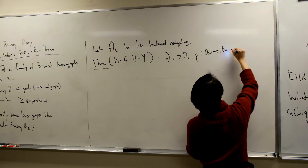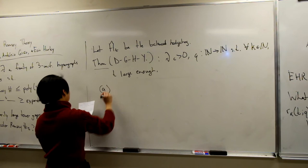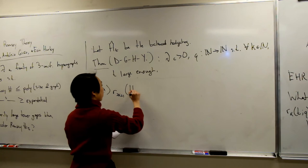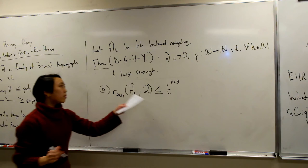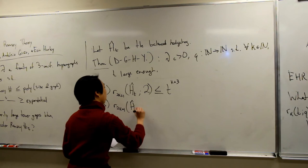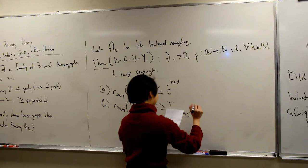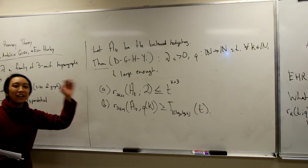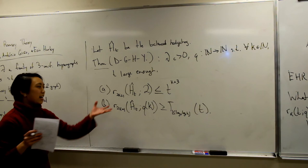And if we look at the Q-color Ramsey number, where Q is some function of K, this is at least a tower of height log log K. Not quite linear in K, but the point is this gives us arbitrary gaps between the two and the Q-color Ramsey numbers. I'll address why we get log log K later.